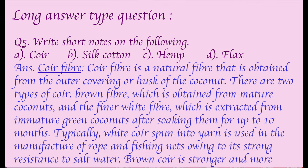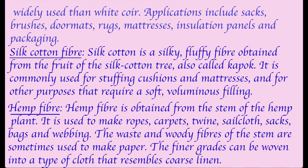Question five: Short notes. First - Coir fiber: Coir is a natural fiber obtained from the outer covering of the husk of the coconut. There are two types: brown coir from mature coconuts, and finer white coir from immature green coconuts soaked for up to 10 months. White coir spun into yarns is used for rope and fishing nets. Brown coir is stronger and more widely used; applications include sacks, brushes, doormats, rugs, mattresses, insulation panels, and packaging.